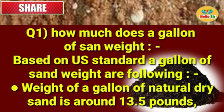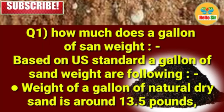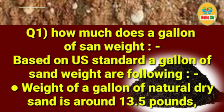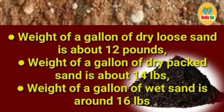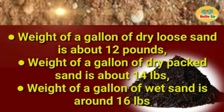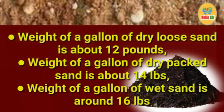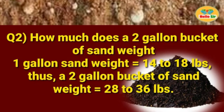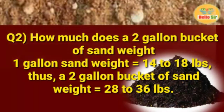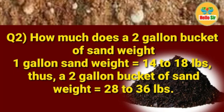Based on US standard, a gallon of sand weighs as follows: weight of a gallon of natural dry sand is around 13.5 pounds, weight of a gallon of dry loose sand is about 12 pounds, weight of a gallon of dry packed sand is about 14 pounds, and weight of a gallon of wet sand is around 16 pounds.